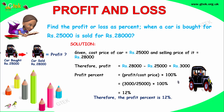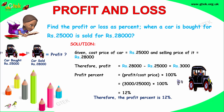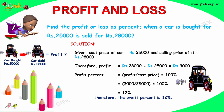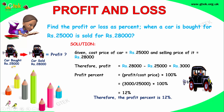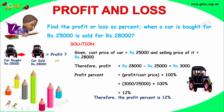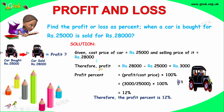Find the profit or loss as a percentage when a car is bought for rupees 25,000 and sold for rupees 28,000. The car was bought for 25,000 and sold for 28,000, so it's a profit. The profit is the selling price minus the cost price — here the selling price is 28,000 and the cost price is 25,000.